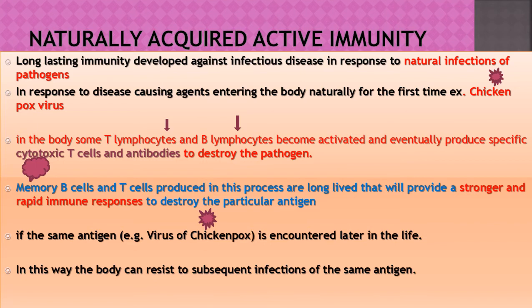These memory cells are long-lived and will provide a stronger and more rapid immune response if the same antigen is encountered later in life. They differentiate into effector cells which produce a stronger and rapid response to that particular antigen. So if the chicken pox virus is encountered later in life, the body can resist subsequent infections of the same antigen. This is naturally acquired active immunity, involving T and B lymphocytes and memory cells.